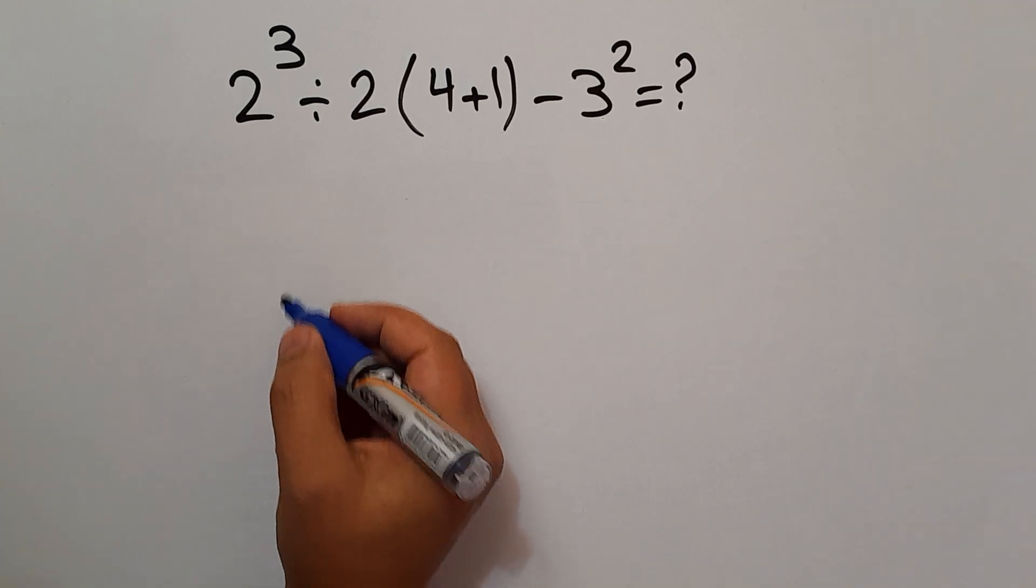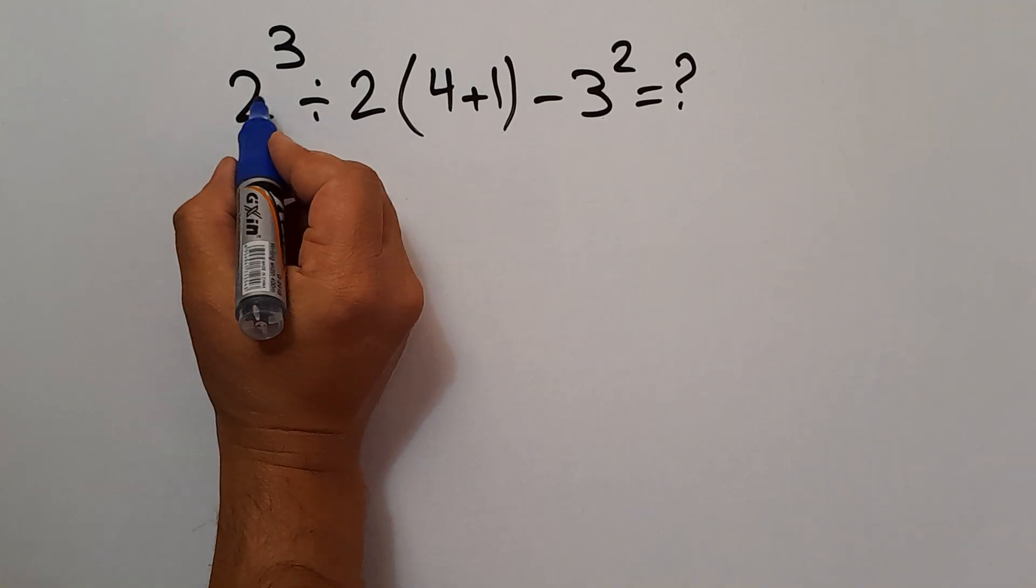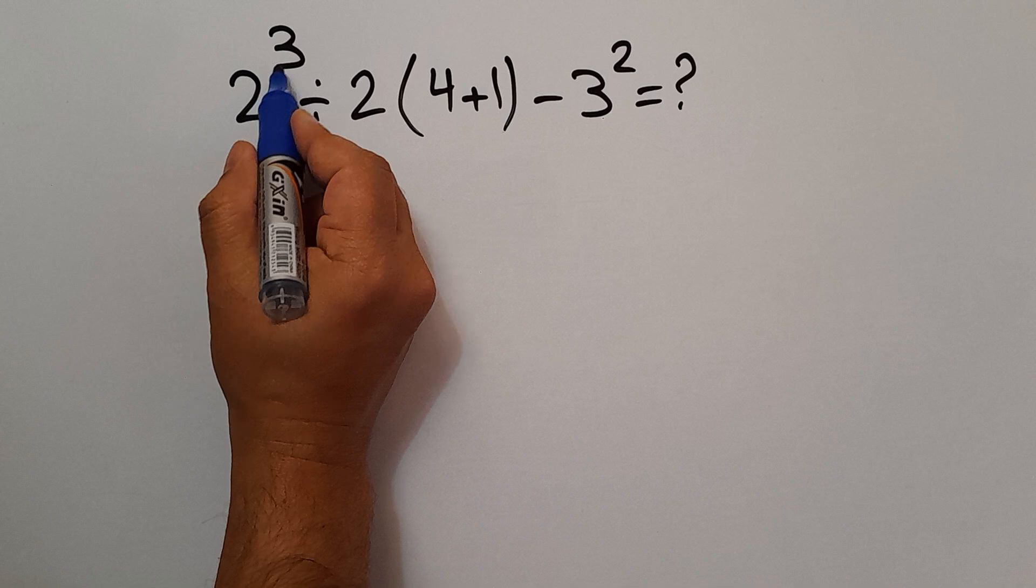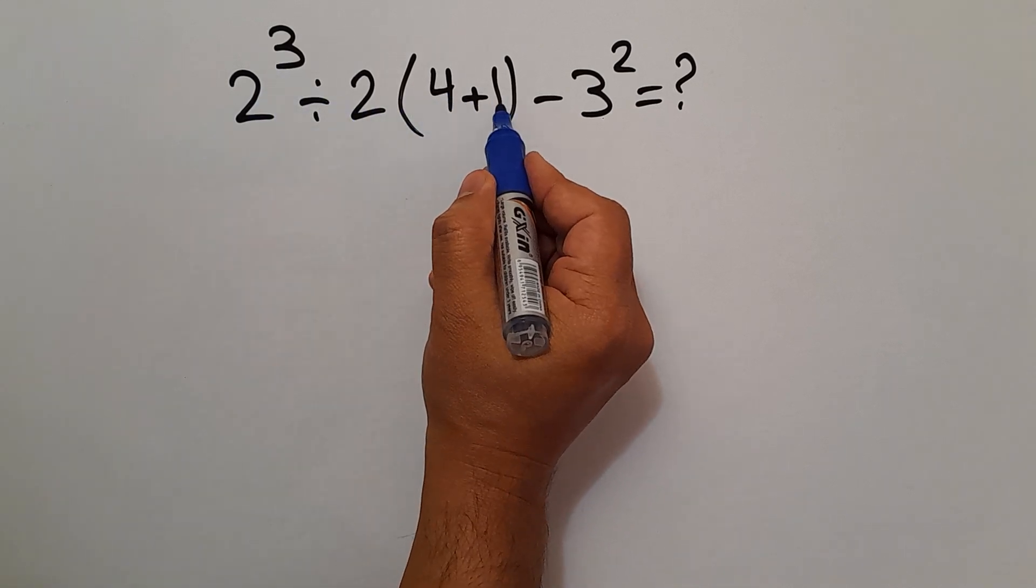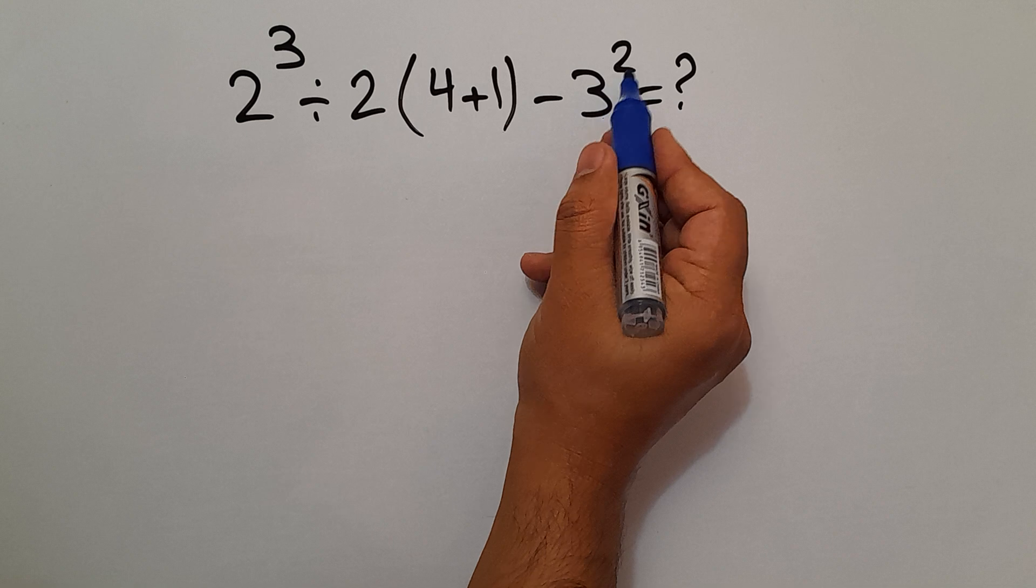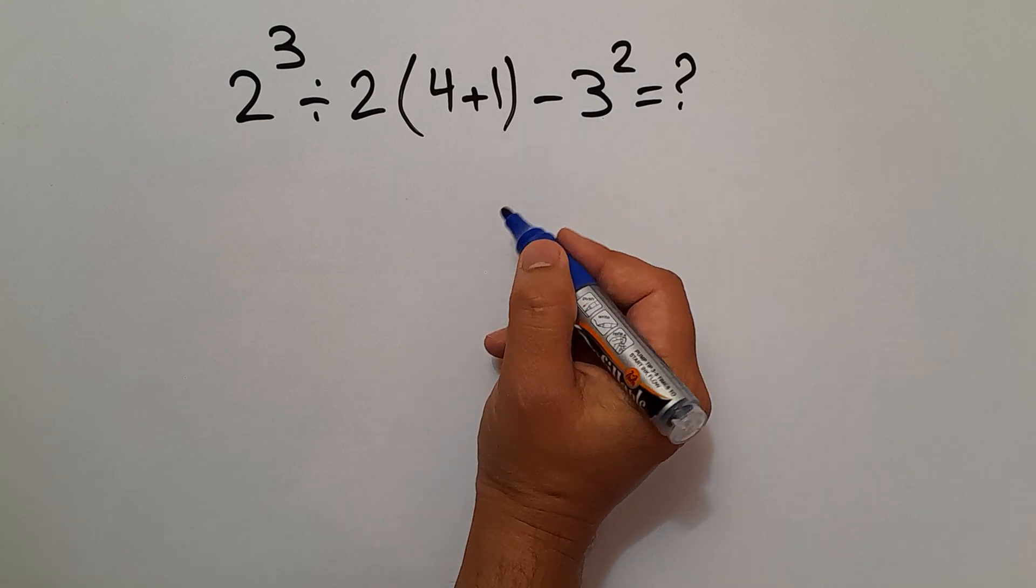Hi everyone and welcome to this video. In this video we want to find the value of this expression: 2³ ÷ 2(4+1) - 3². Are you ready to solve? Let's get started.